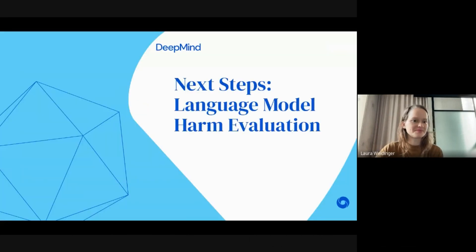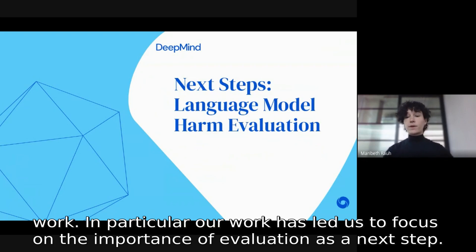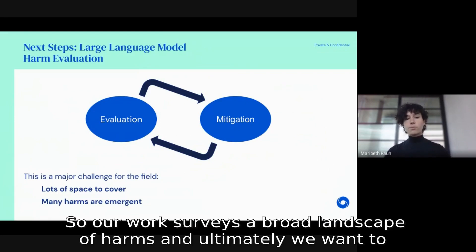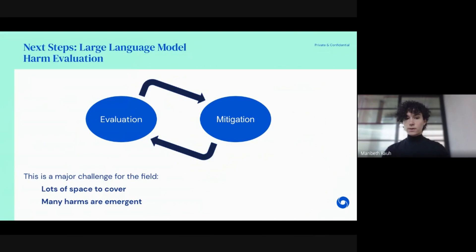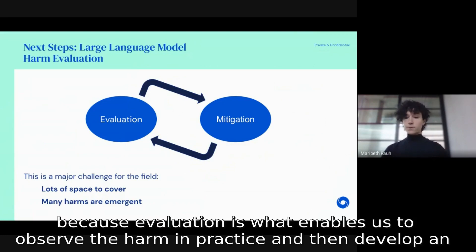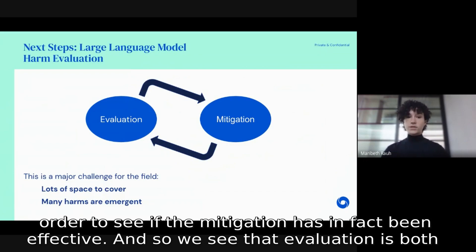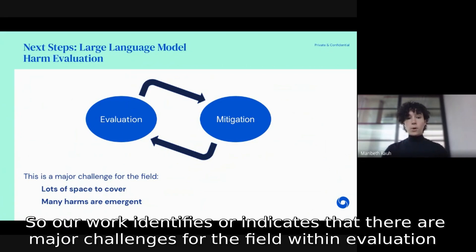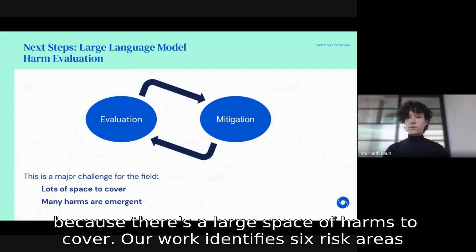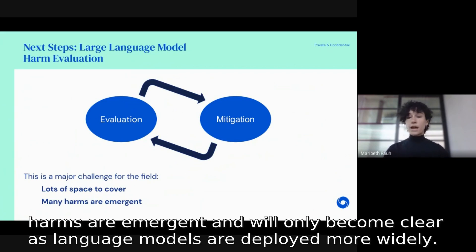Thanks, Laura. I'll be talking about some next steps we've identified building off this work. In particular, our work has led us to focus on the importance of evaluation as a next step. Our work surveys a broad landscape of harms, and ultimately we want to mitigate these harms in the real world — but a prerequisite of mitigation is evaluation, because evaluation is what enables us to observe the harm in practice and develop an appropriate mitigation. Once we've mitigated the harm, we have to evaluate again to see if the mitigation has been effective. Our work indicates there are major challenges for the field within evaluation, because there is a large space of harms to cover — six risk areas with 21 observed and anticipated risks — and many harms are emergent and will only become clear as language models are deployed more widely.